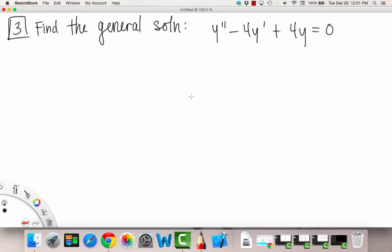Number three. Again, we're going to find the general solution, this time of y double prime minus 4y prime plus 4y is equal to zero.